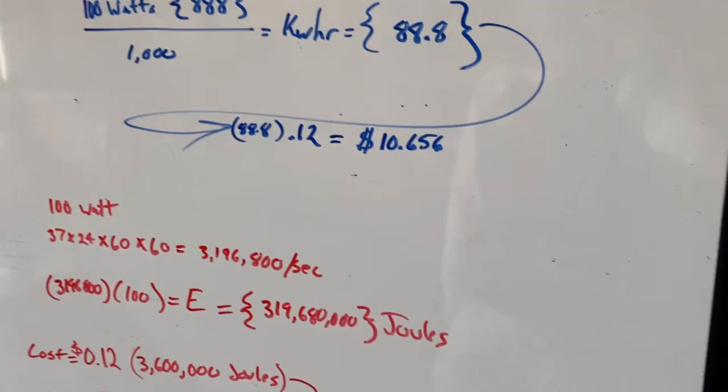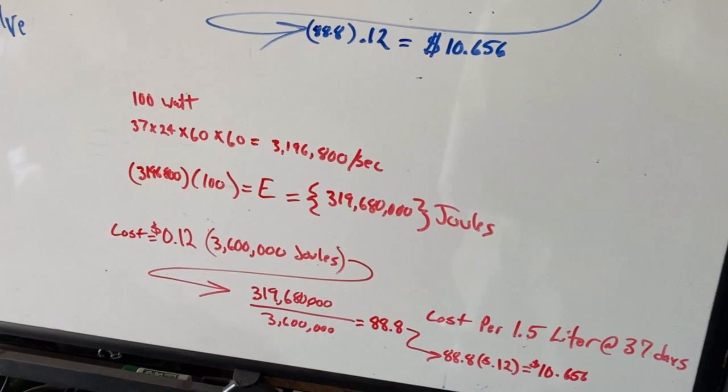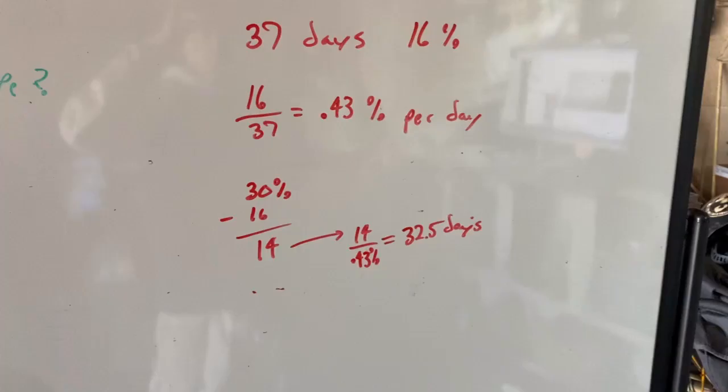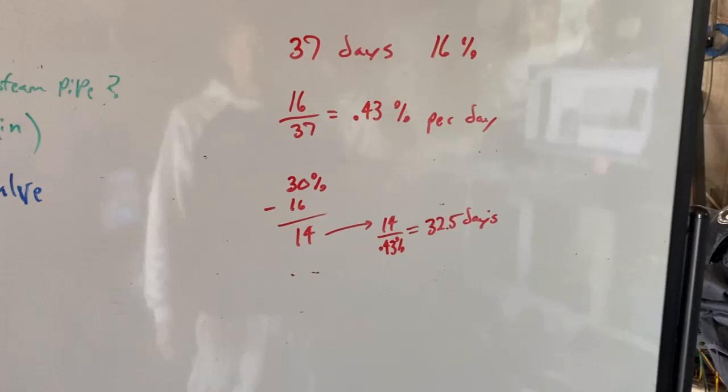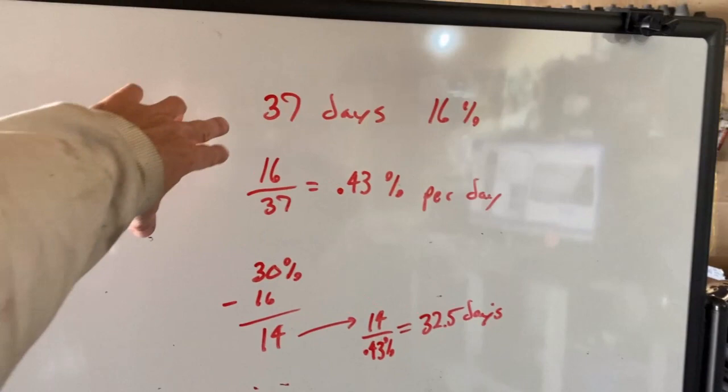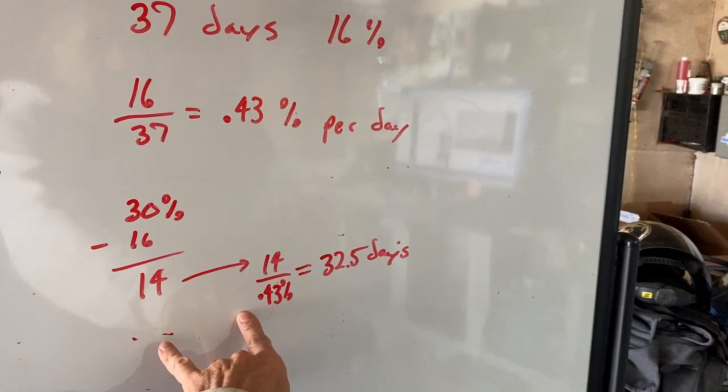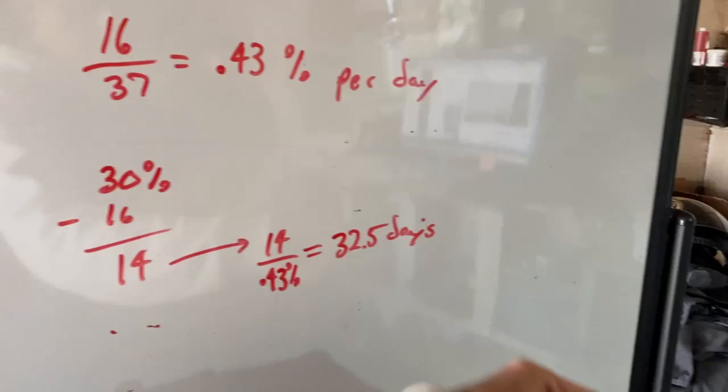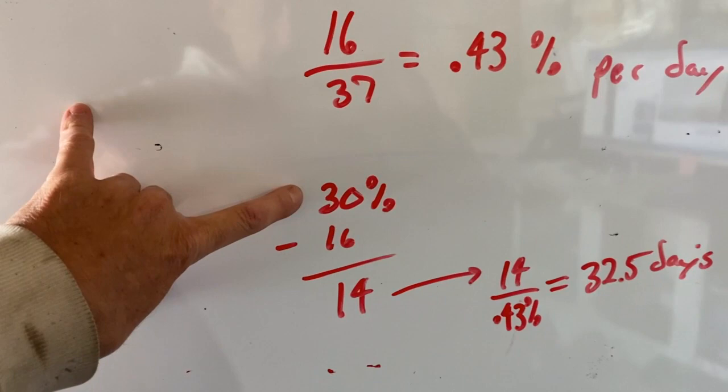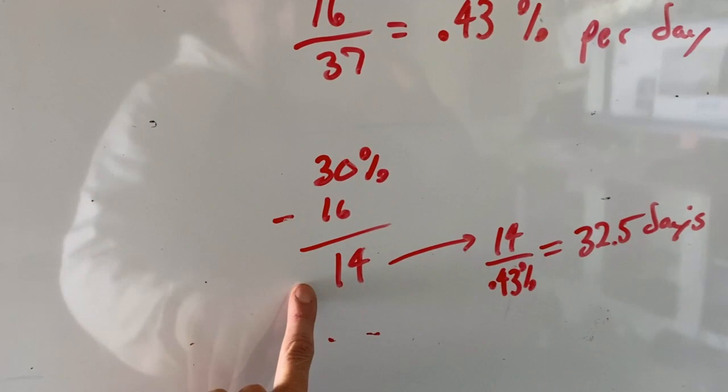So where are we at on concentration increase? The last time we did a test we were only climbing at about 0.2 percent per day, so it's doubled. With this projection we can deduce that we will be around 30 percent solution in 32.5 days. Just so this makes sense to you, if we have 30 percent and we're currently at 16 percent, we need to achieve 14 percent more. 14 divided by 0.43 equals 32. If 0.43 equals a day, then that's actually 32.5 days.